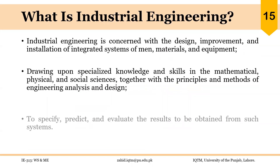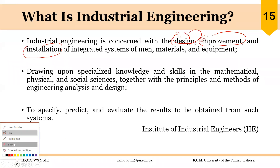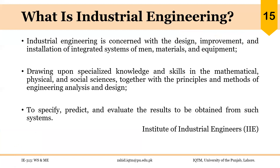If we discuss a formal definition of industrial engineering, you will get a better view of what industrial engineers do. Industrial engineering is concerned with the design, improvement and installation of integrated systems of men, materials and equipment. For this, industrial engineers need knowledge and skills in mathematical, physical and social sciences, together with the principles and methods of engineering analysis and design.